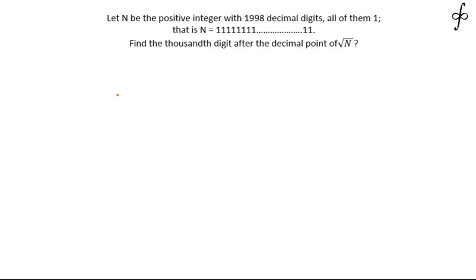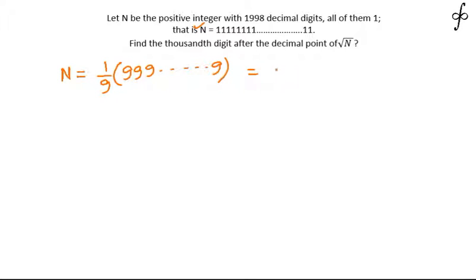Let's discuss the challenging problem where we have a number N that has 1998 ones. To start with, we can see that the number N can be written as 1/9 into a collection of 9s — all digits are going to become 9 — and that can simply be written as (10^1998 - 1) / 9.